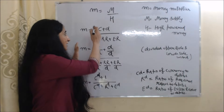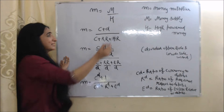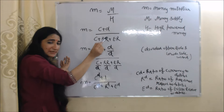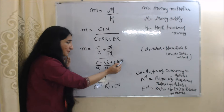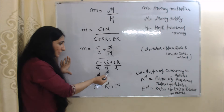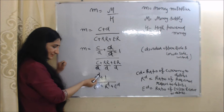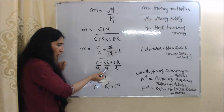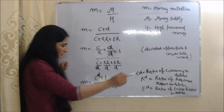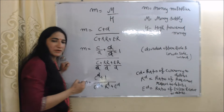Now we will see the formula of money multiplier. m equals M over H. Here small m represents money multiplier, capital M represents money supply, and H represents high powered money. As we know, money supply equals C plus D, and high powered money equals C plus RR plus ER. When we divide the upper and lower sides by D, it becomes: (C/D + 1) over (C/D + RR/D + ER/D). We can write C over D as CD, RR over D as RD, and ER over D as ED. Here CD is the ratio of currency to deposit, RD is the ratio of required reserve to deposit, and ED is the ratio of excess reserve to deposit. This becomes the formula of money multiplier.